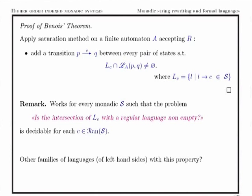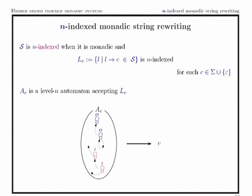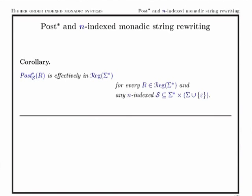We cannot improve this result for context-free languages: when we look at post-images of context-free languages we may get a non-recursive language. What will interest us is n-indexed monadic string rewriting systems — those systems where the language of left-hand sides for each letter belongs to the family of n-index languages. We can view all the rules with the same right-hand side as being represented by a level n automaton accepting all the words with that right-hand side. For regular languages, the result can be constructed effectively in this case as well.